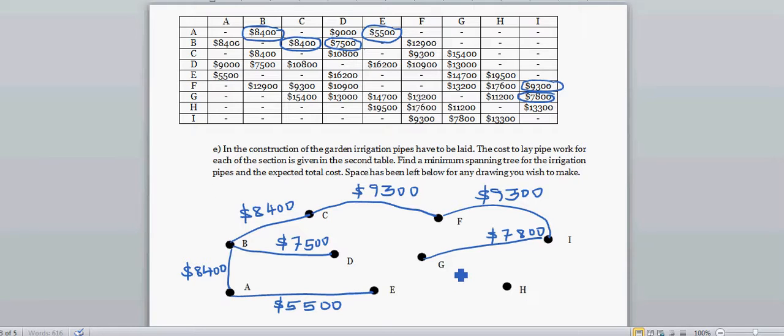And now only unconnected is H to G. The next lowest is 10,900. So let's look at this. 10,900 is from F to D. So should I connect F and D? F and D should not be connected because it's already connected. The next is from H. So let's look at from H to. The lowest to be connected, for H to be connected is 11,200. So this is 11,200. And this is the minimum spanning tree. So the minimum cost for laying the pipeline would be the total of all these dollars. And I think you can do that yourself.